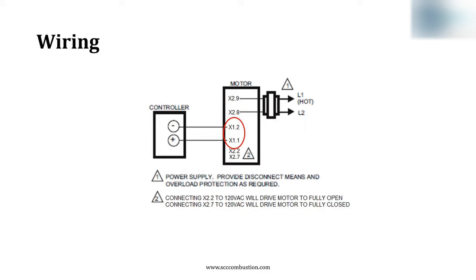To force the actuator fully open, connect 120 volts to X22. And to force it fully closed, connect 120 volts to X27. These terminals can be used for purge and or ignition position commands.